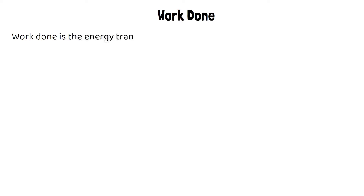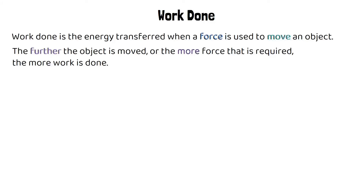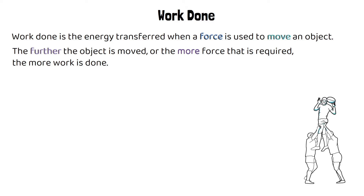For a recap on what work done is: work done is the energy that's transferred when a force is used to move an object. The further the object is moved, or the greater force needed — for example, if the object is heavier — the more work is done because more energy will be transferred. An example of this would be two rugby players lifting a third player into the air; they're using a force to lift that person.